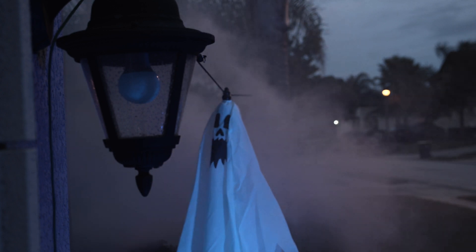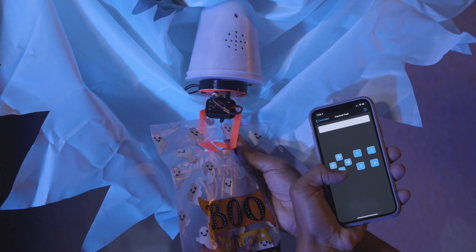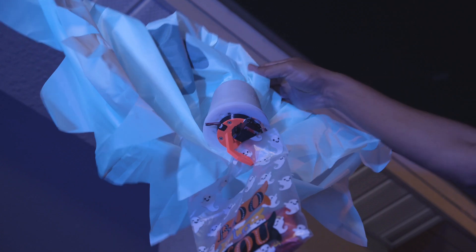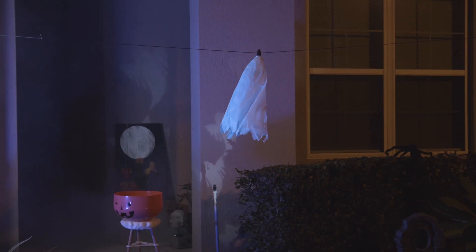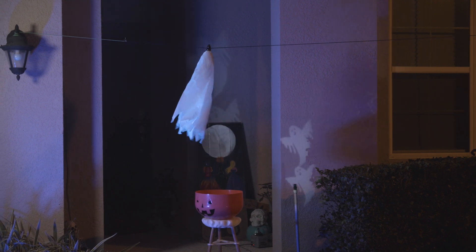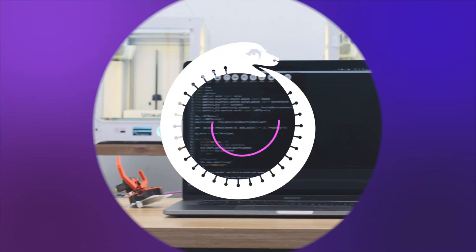The servo is triggered using our phone with the Bluefruit Connect app. This is a 3D printed claw gripper that we designed to hold a small bag of candy. We think this is a fun way to give out candy that could be adapted for all sorts of projects.